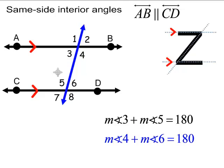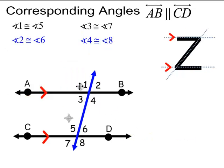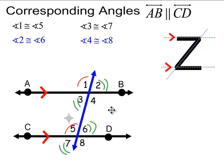Same-side interiors are not necessarily congruent, but they are always supplementary if AB is parallel to CD. These same-side interior angles — angles 3 and 5 — will be supplementary, and so will angles 4 and 6. For corresponding angles, angles 1 and 5 are congruent, angles 3 and 7 are congruent, angles 2 and 6 are congruent, and angles 4 and 8 are congruent, assuming AB is parallel to CD.